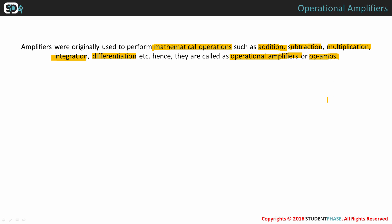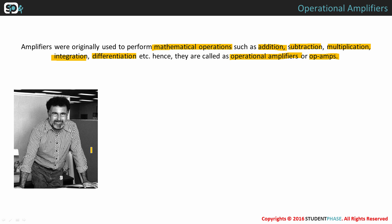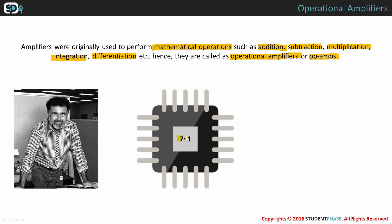Between 1964 to 1968, a scientist named Robert Weidler brought out 741 integrated circuit op-amp made of BJTs and FETs.